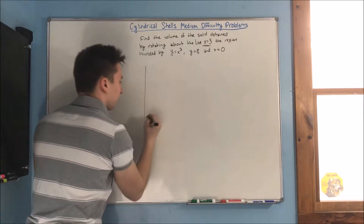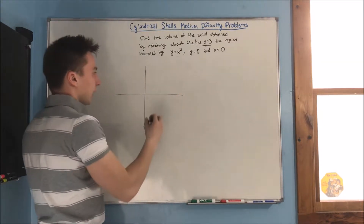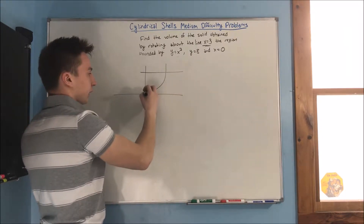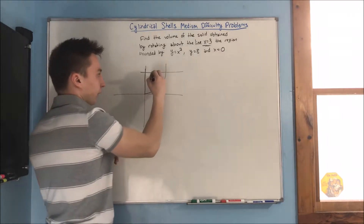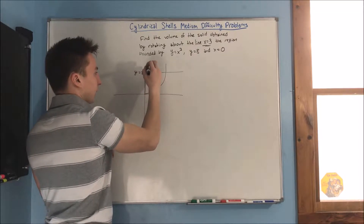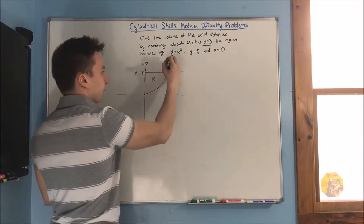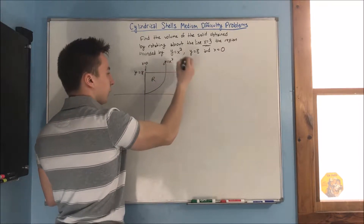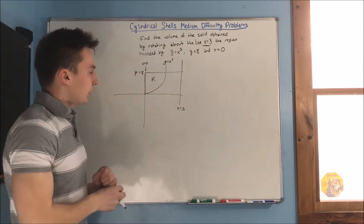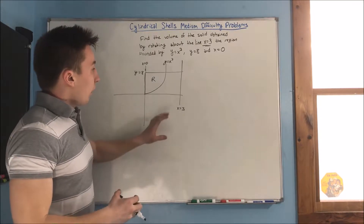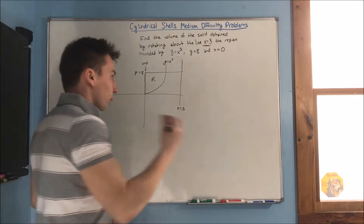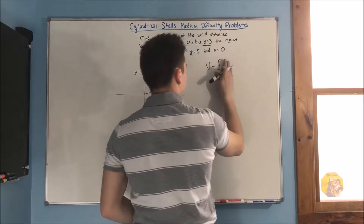Let's start out by drawing what we're talking about here. We have our axes, we have y equals x cubed, we have y equals 8, we have x equals 0. That's our region right here. We can draw y equals 8, x equals 0, y equals x cubed, and we're rotating about x equals 3. Now we know our region is that little area right here, and we can find our volume by doing cylindrical shells.